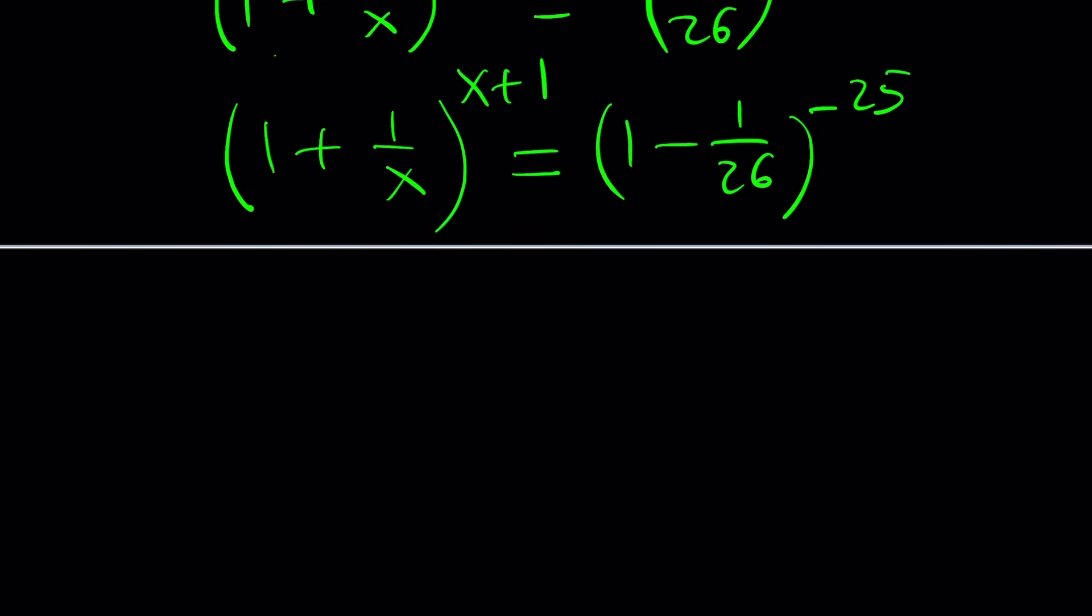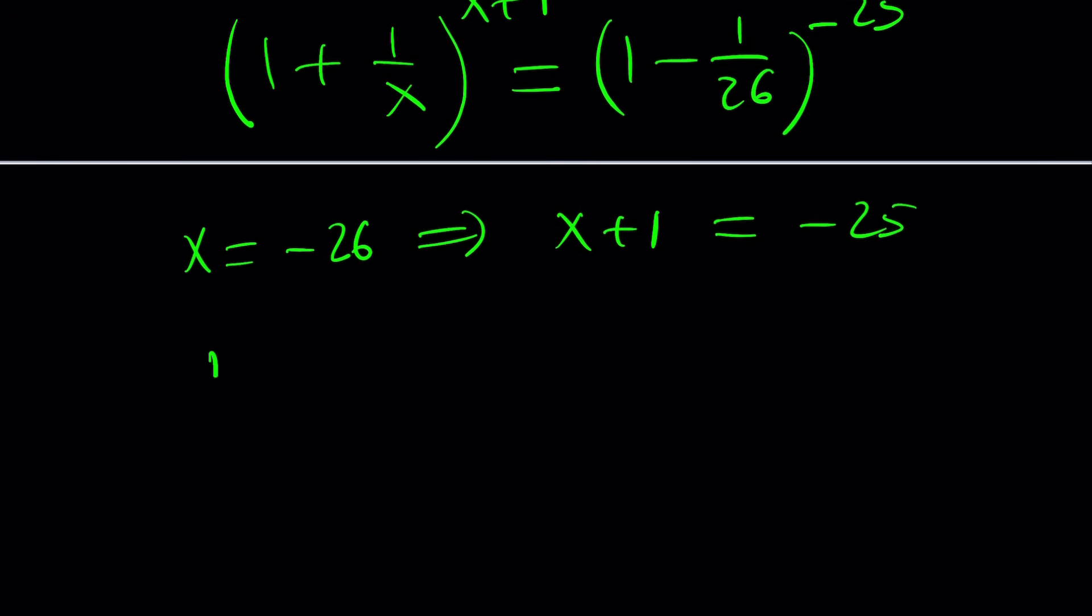Now, can you safely say that if x equals negative 26, then x + 1 is going to be negative 25 and everything will work out? Yes and no. So we've got to tweak it a little bit, just a tiny bit of touch-up.